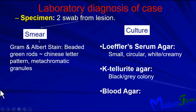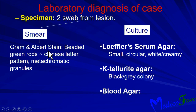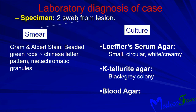For laboratory diagnosis, specimen collection involves two swabs from the lesion or pseudomembrane: one for smear and staining, the other for culture. In smear examination, we perform gram stain and Albert's stain, showing gram-positive rods. In Albert's stain we can see beaded green rods, Chinese letter pattern, and metachromatic granules. Special culture media used are Löffler's serum agar, potassium tellurite agar, and blood agar.